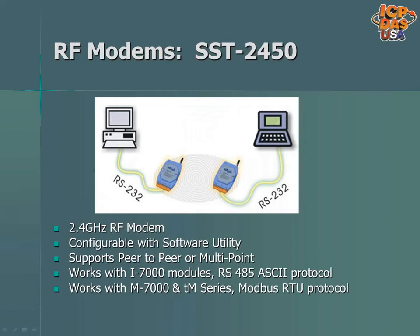Radio frequency applications operate over wireless private radio networks, and often operate over the 2.4 GHz band or 900 MHz bands. They were designed for data acquisition applications between a host and remote sensors. RF modems are set up with a software utility and support peer-to-peer or multipoint topologies. You can use our RF modems with computers, controllers, and our i7000 RS-485, M7000 Modbus RTU, and TM series Modbus RTU products.